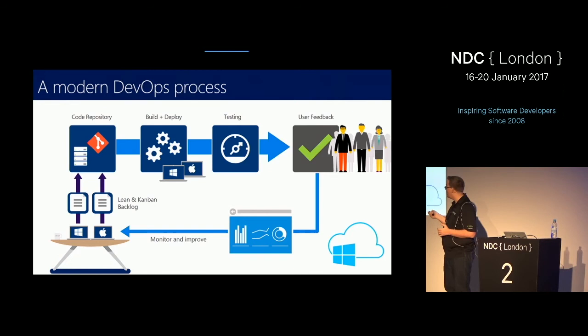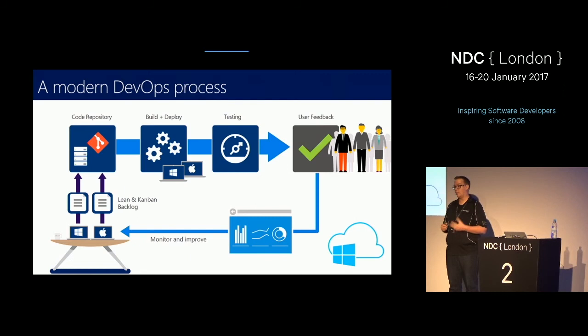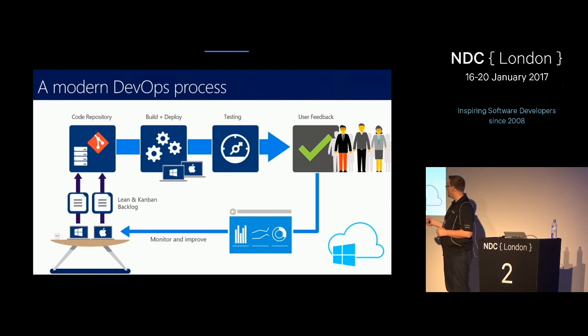We try to have an automated build and deploy for all of our extensions. When we started one and a half to two years ago with building the first extensions, it was easy — we only had one extension and our program manager took the file and deployed it to the marketplace. We now have more than 20 extensions, so it starts becoming cumbersome to do by hand, and we've started optimizing the process. Kanban, Git, continuous integration, continuous deployment — with everything VSTS has to offer. We use the new task-based build system and release management for deployments. We use Azure to store our files.